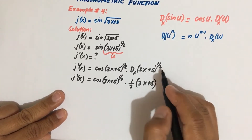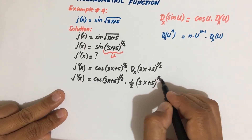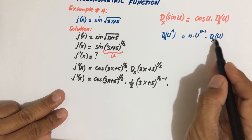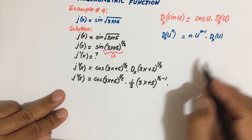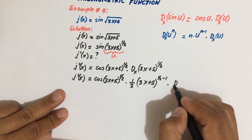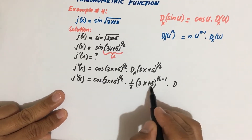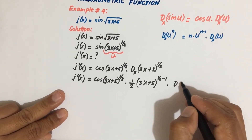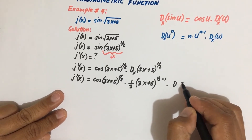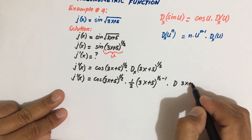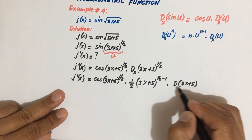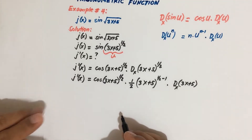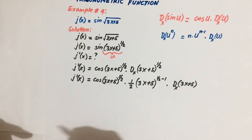Our n is one-half, so n minus 1 is one-half minus 1. Then times the derivative of u — so that means the derivative of our u, which is 3x plus 5, with respect to x.